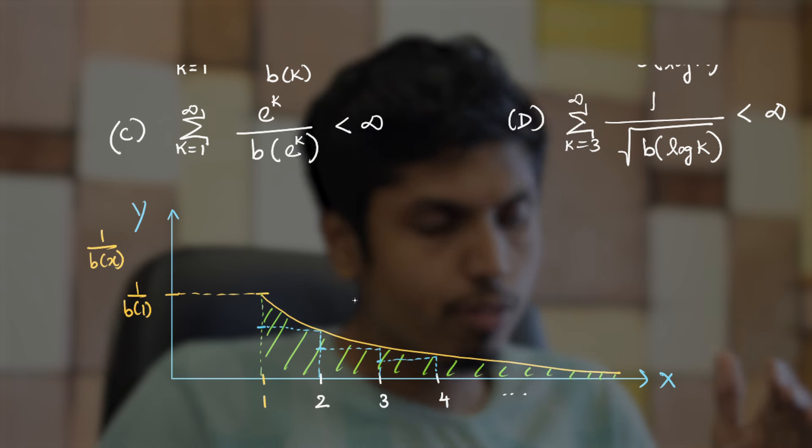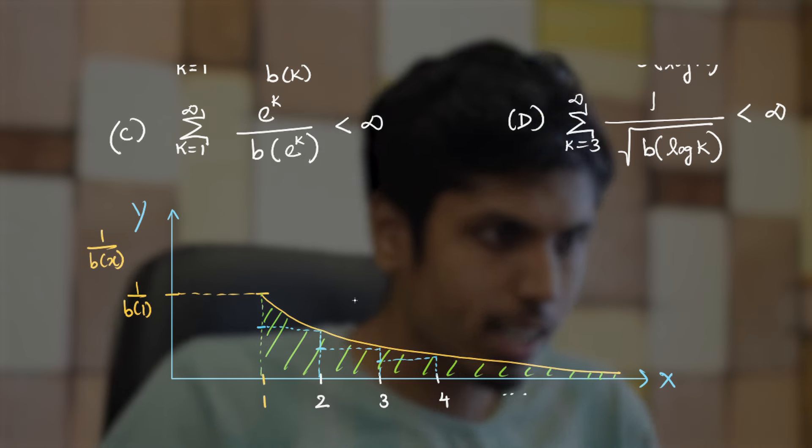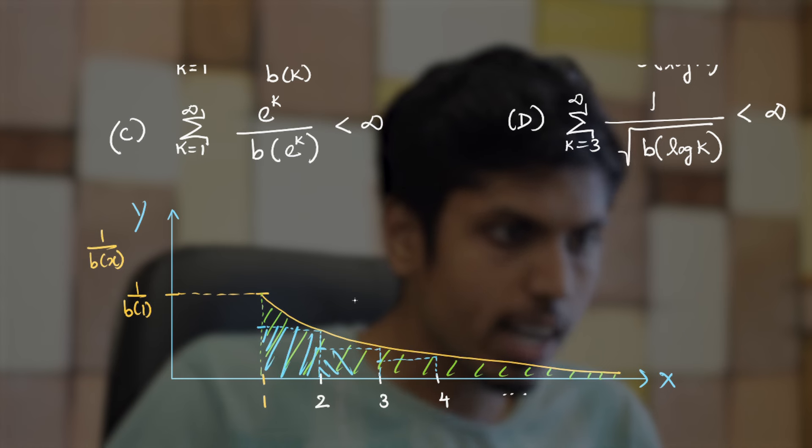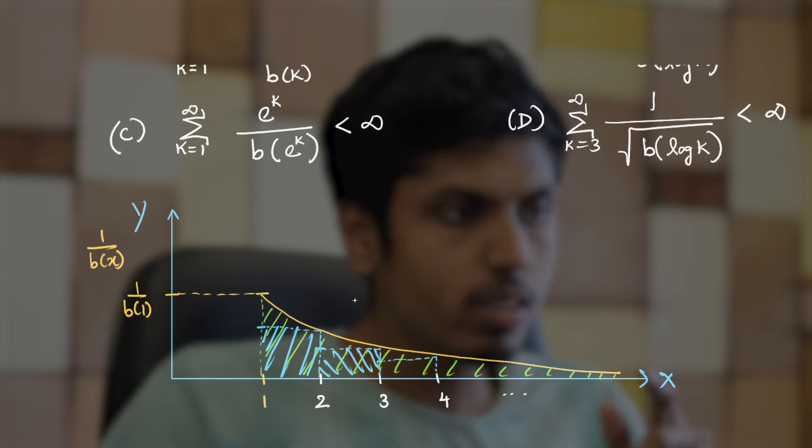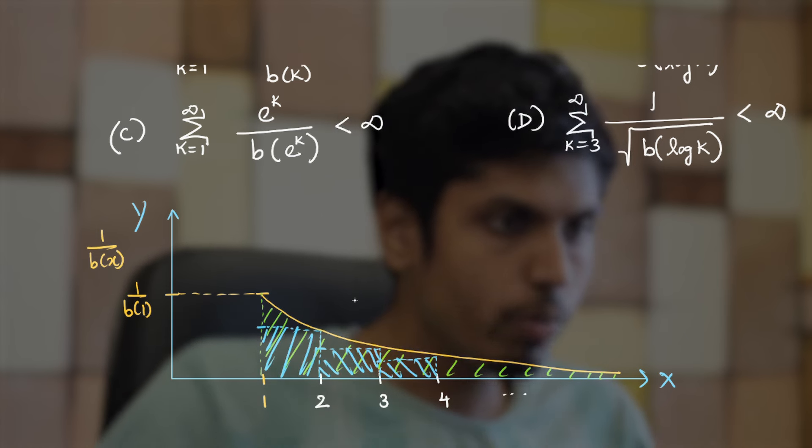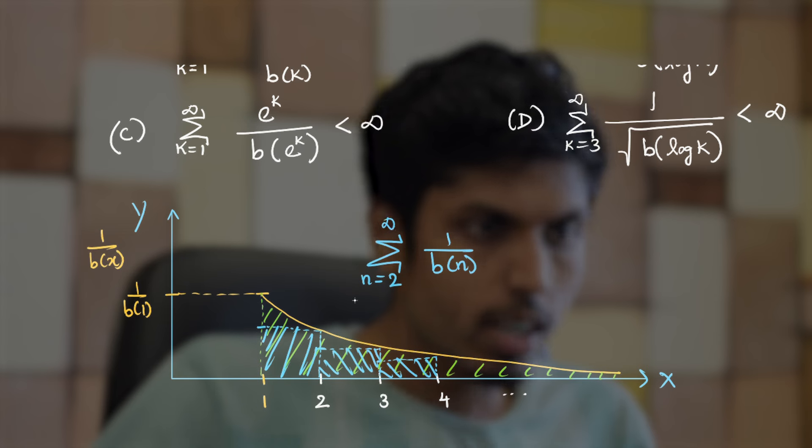That would mean summation 1/b(n) where n goes from 2 to infinity converges. Let's say that value is L because it is less than some other value which indeed converges.